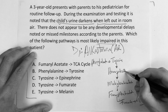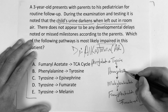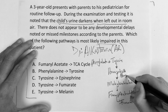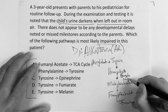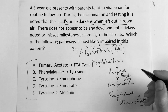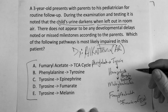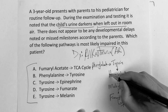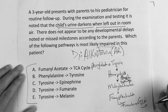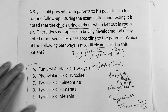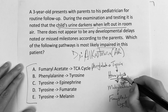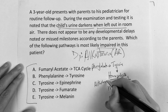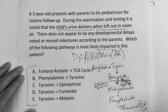But we know this homogentisate or homogentisic acid needs that enzyme — the homogentisate oxidase, or dioxygenase — to keep this pathway going. So if we have an error or deficiency here for whatever reason, we're going to get a buildup of homogentisate, homogentisic acid, which is going to give us the alkaptonuria.